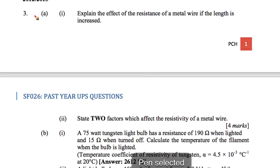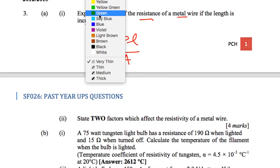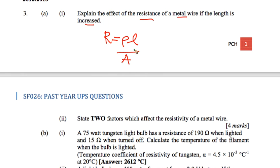Number three: explain the effect of resistance of a metal wire if the length is increased. The equation for resistance is R = ρL/A. Looking at the equation, L and R are proportional — when the length increases, R also increases.